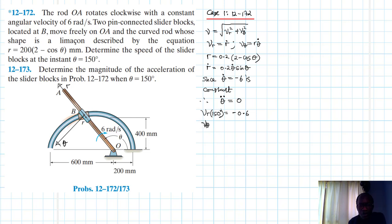And we have Vθ at 150. So it's r, we know what r is. It's 0.2(2 - cos 150) times θ dot, which is just minus 6. So this gives us minus 3.44 meters per second.